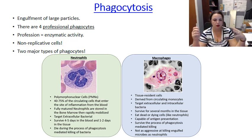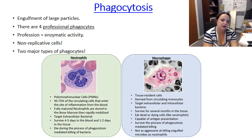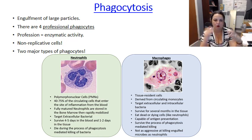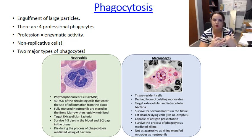Phagocytes are not replicative — they are in their final differentiated form and will never make more of themselves. Unlike lymphocytes that grow when activated, phagocytes kill when activated. It's a kill-or-be-killed world. They are part of the innate immune response and are capable of phagocytosis and elimination of ingested microbes.